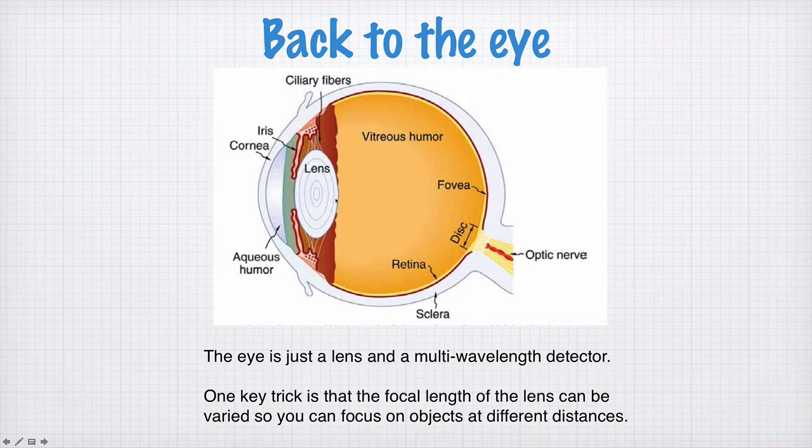This lens needs a variable focal length because objects can be at different distances away. To keep the image distance fixed—the distance between the lens and the retina—you need to be able to change the focal length of the lens.